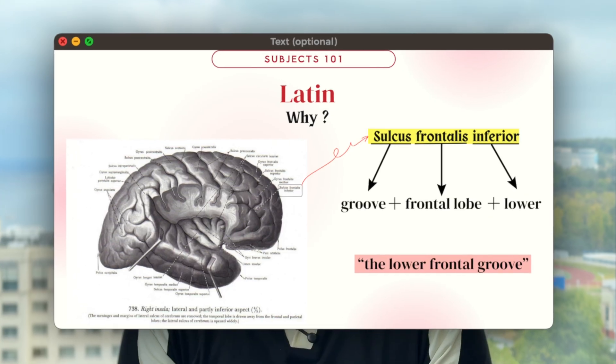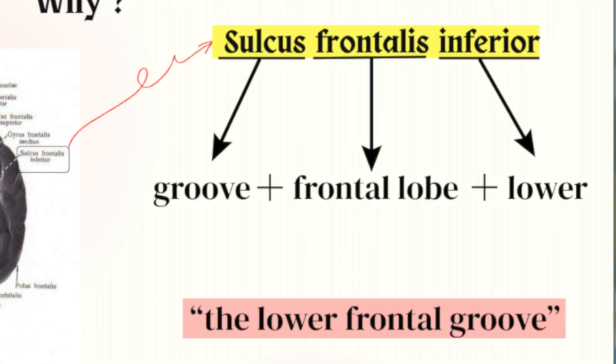The next subject is Latin language. You might wonder why you need to study it — when you read the Atlas, you will see names in Latin, and in order to understand and decode those words, you need to learn Latin. For example, 'sulcus frontalis inferior' decodes to frontal lobe, groove, and lower — meaning the lower frontal groove. Latin works as a common medical language, and as I'm in third year, some concepts from first year Latin come again in pharmacology.